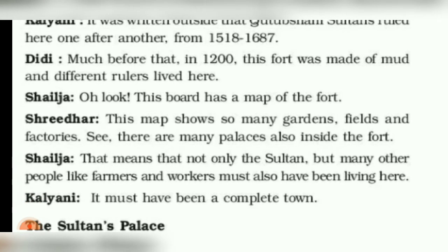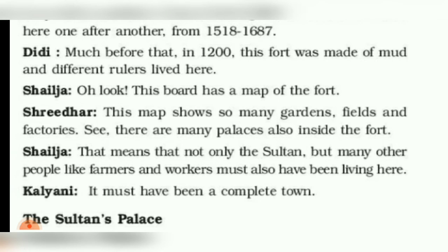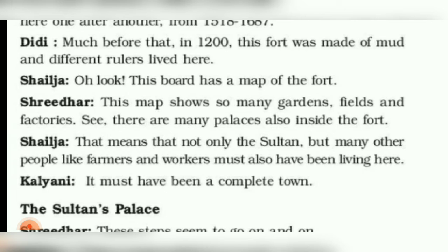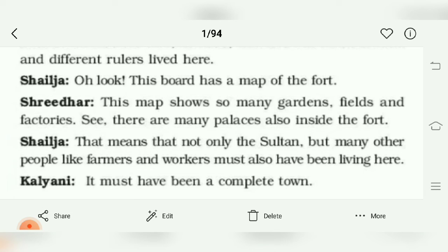Shayja says: Oh look, this board has a map of the fort! This map shows so many gardens, fields, and factories. There are many places inside the fort. This means that not only the sultans, but many other people like farmers and workers must also have been living here. Kalyani adds: It must have been a complete town.